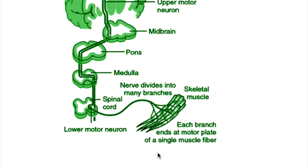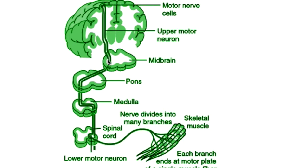In the lateral and anterior corticospinal tract, because of the death and degeneration, there is thinning of this tract and also proliferation of the microglial and astroglial cells, as occurs in other degenerative processes. In the lateral column, thinning of the corticospinal tract leads to loss of fibres with fibrillary gliosis, known as lateral sclerosis.